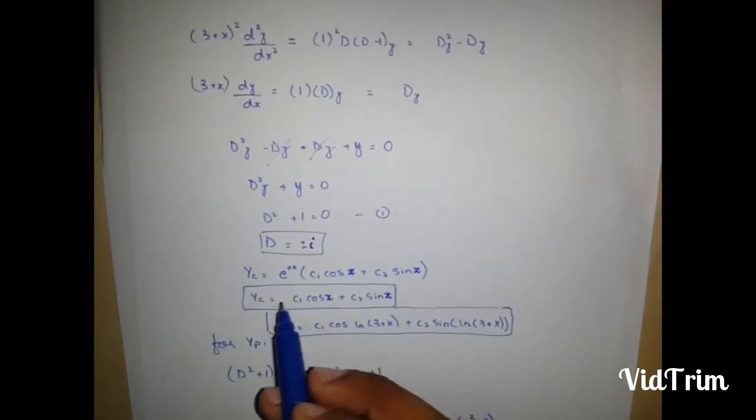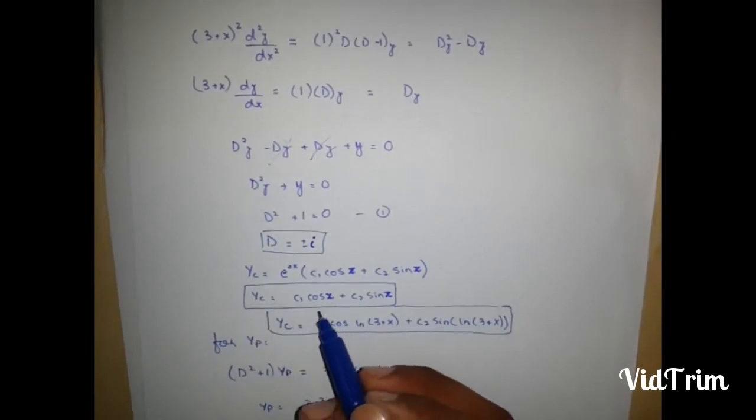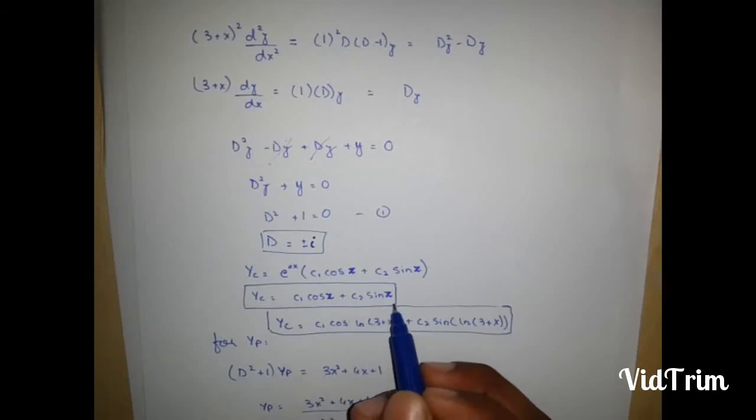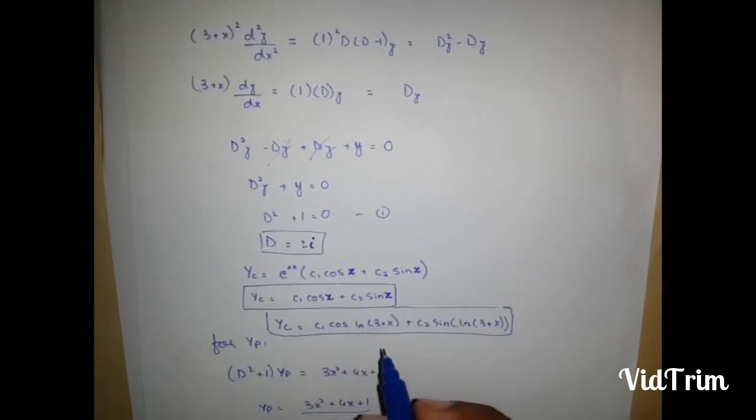Our yc is equal to c1 cos z plus c2 sin z. Replace z with ln 3 plus x like this, and our yc is equal to this.